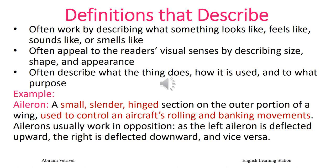Now let us look at a small example: the term aileron. Looking at the definition, it is very clear that it is a definition that basically describes the term. Aileron is a small, slender, hinged section on the outer portion of a wing, used to control an aircraft's rolling and banking movements. The first part of the definition describes the shape and size — it is a small, slender, hinged section — and then explains the purpose: it is used to control an aircraft's rolling and banking movements. So this is a perfect example of a definition that describes.